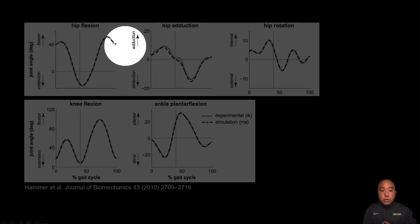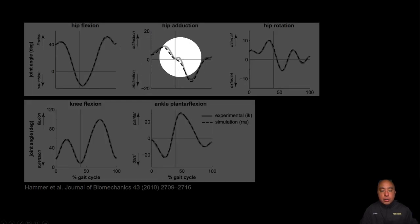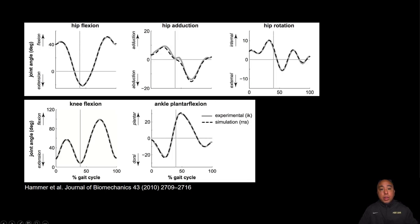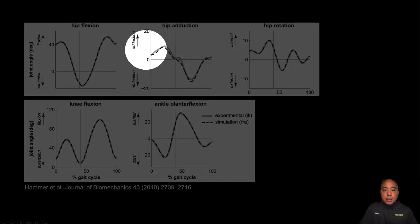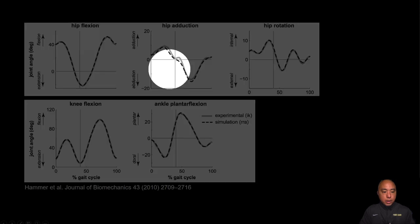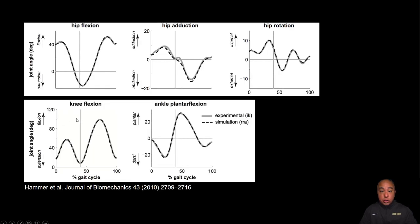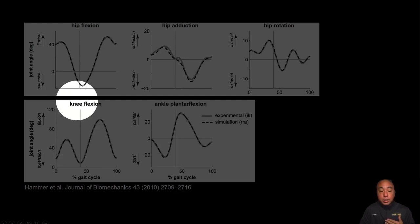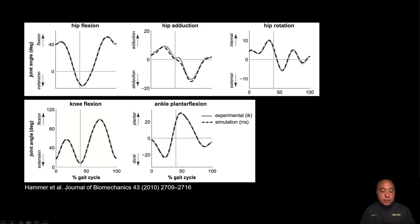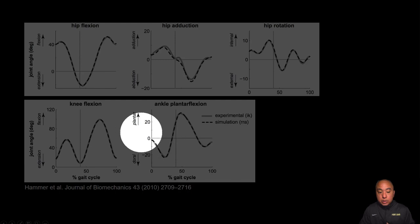Hip flexion-extension patterns during running are very similar to walking, with the key difference being increased range of motion. Hip adduction is important because the runner is always on one leg at a time, requiring maintenance of the center of gravity in the frontal plane. The runner must fire the hip abductors — gluteus medius and tensor fascia latae — to maintain a centered position. At the knee, the loading response shows increased flexion during the stance phase as it goes from absorption through propulsion.